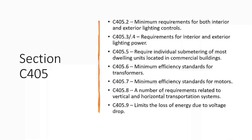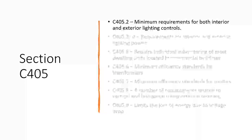Here are all the subsections for C405. I'm going to go over all of them. I've broken the lecture into two parts, so for this part we're only going to go over C405.2. The second half is going to go over the remaining sections, mostly focusing on 0.3 to 0.5. Sections 0.6 to 0.9 are mostly for electrical engineers or electricians, so mechanical or architectural designers will not typically be using that part of the code.